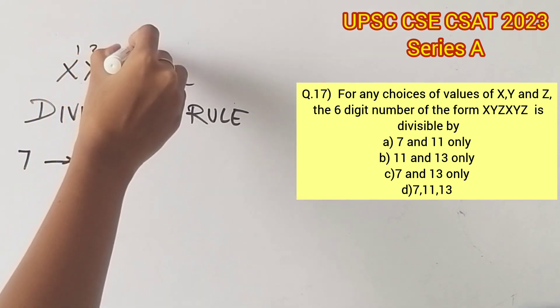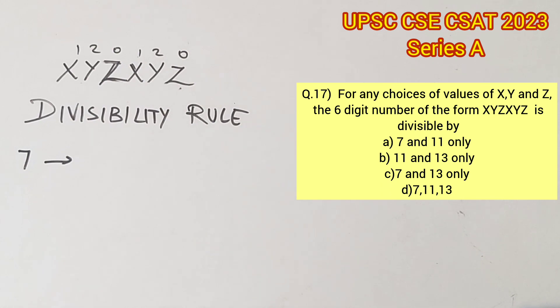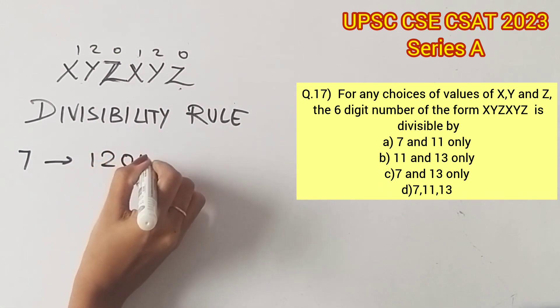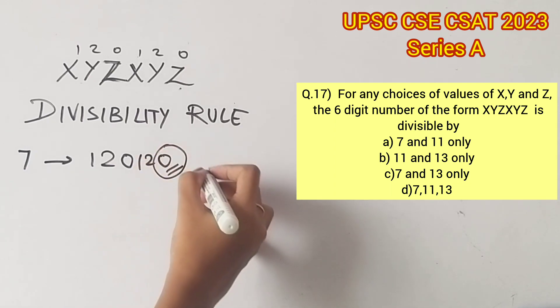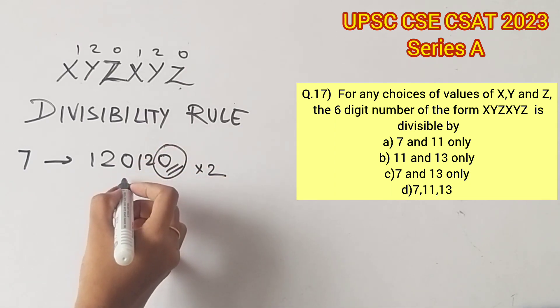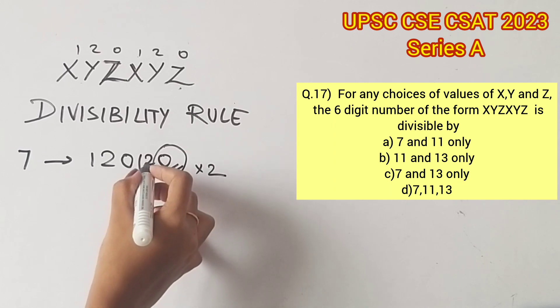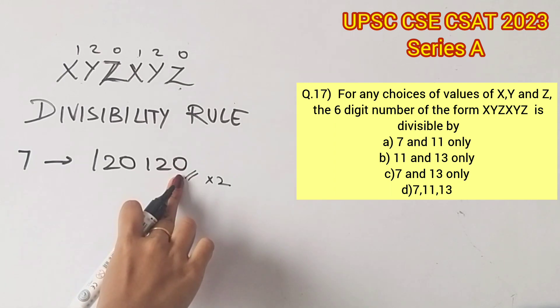Let us assume random values for X, Y, and Z. I am assuming 120, so the six-digit number would be 120120. To check the divisibility of 7, the rule is to multiply the last digit with 2 and subtract it from the rest of the digits. We have to repeat this process until we get a smaller number.